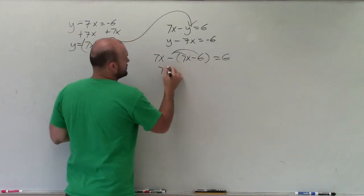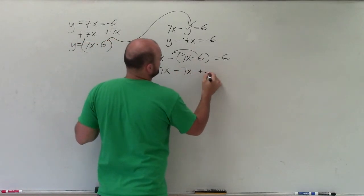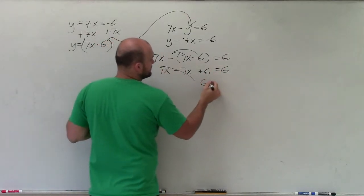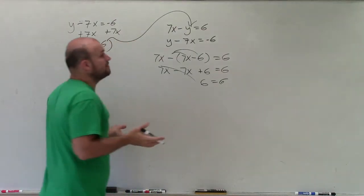Well, I need to make sure I apply the distributive property. So I have 7x minus 7x plus 6 equals 6. Well, that goes to 0. And I'm left with 6 equals 6, which is always going to be true.